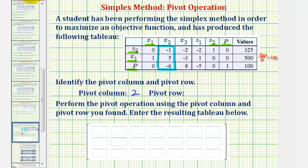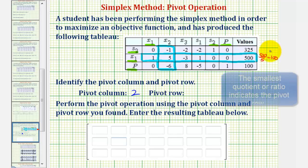But I wanted to mention that because if, for example, this entry here was, let's say, positive two, we'd have to take 325 divided by two to determine the smallest ratio and then determine the pivot row.